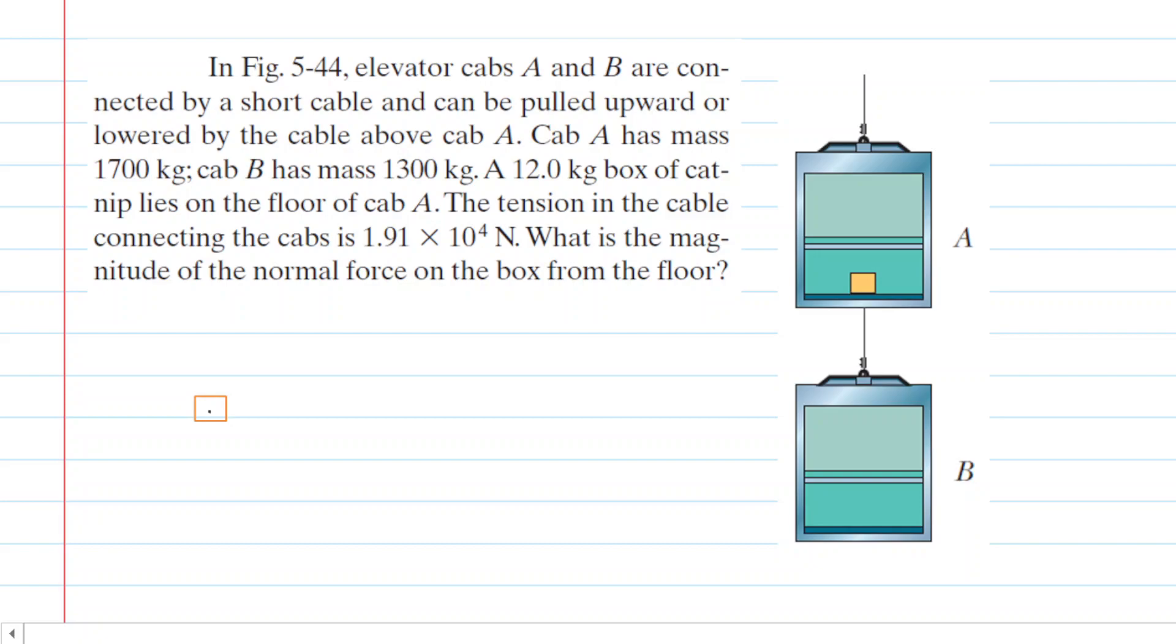Now of course we have the downward gravitational force which we can say is equal to the mass of the box times g and then we also have the normal force.